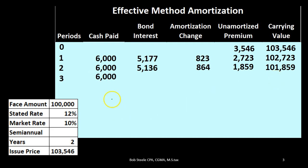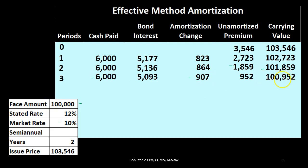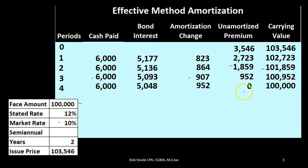For period 3: cash paid $6,000, bond interest is the carrying amount $101,859 times the market rate divided by 2. The difference — the premium amortized — is $907. The unamortized premium drops from $1,859 to $952, giving a carrying amount of $100,952. For period 4: cash paid $6,000, bond interest from carrying amount $100,952. The premium amortized is $952, bringing the unamortized premium to zero and the carrying amount to exactly $100,000.